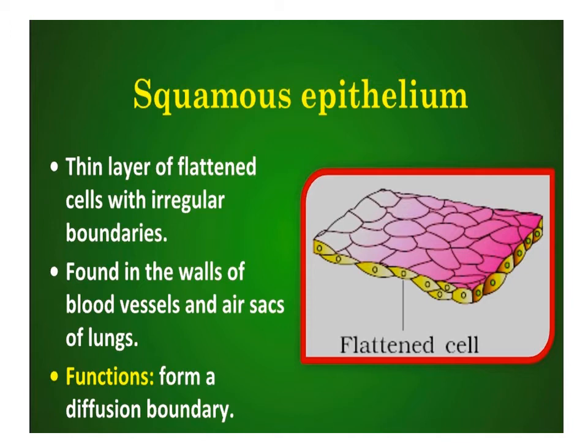Squamous epithelium is made up of a single thin layer of flattened cells with irregular boundaries. It forms the inner lining of alveoli of the lungs, blood vessels, and endothelium. It is involved in the formation of diffusion boundaries.